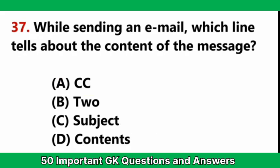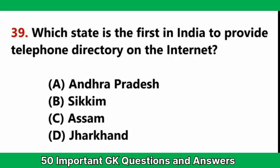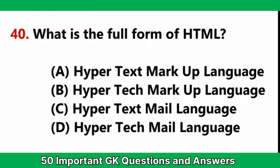While sending an email, which line tells about the content of the message? — Answer C: Subject. What is an unsolicited email called? — Answer D: Spam. Which state is the first in India to provide a telephone directory on the internet? — Answer B: Sikkim. What is the full form of HTML? — Answer A: Hypertext Markup Language.